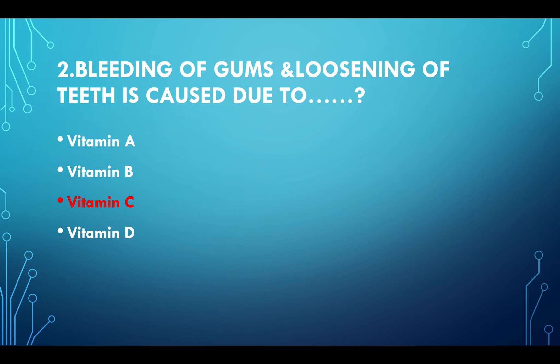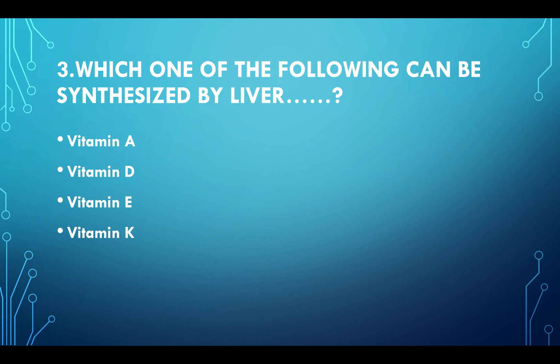Answer: Option C, Vitamin C. Which one of the following can be synthesized by the liver? Option A: Vitamin A. Option B: Vitamin D. Option C: Vitamin E. Option D: Vitamin K. Answer: Option D, Vitamin K.